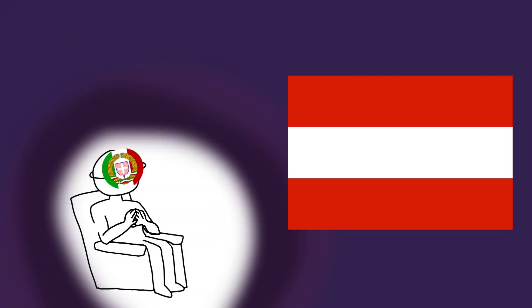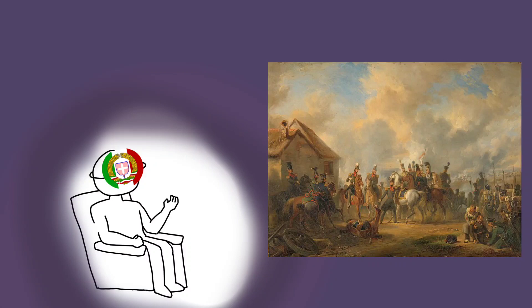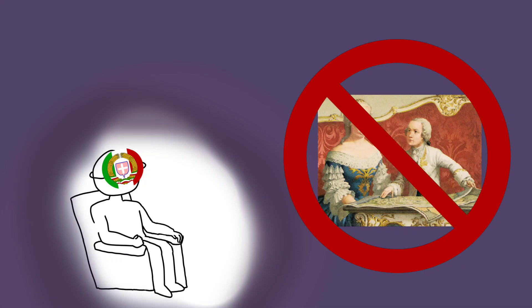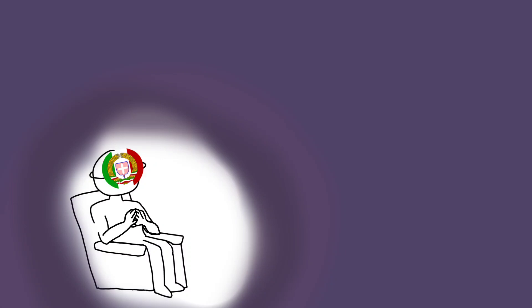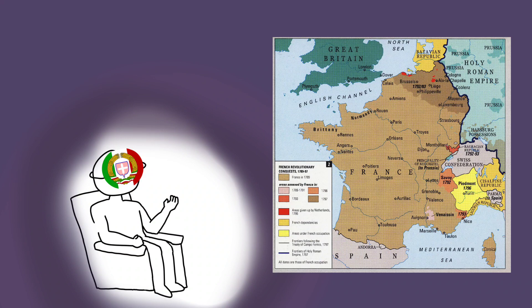But despite winning the war, the Austrians realized that the Belgians would not easily accept their rule again. So they decided to revoke all the reforms Joseph II had made to the Austrian Netherlands during his reign. The new emperor, Leopold II von Habsburg, gained some level of popularity in the Austrian Netherlands, but the status quo would not last for long, as the territory would soon be occupied and annexed by the French Republic during the French Revolutionary Wars.